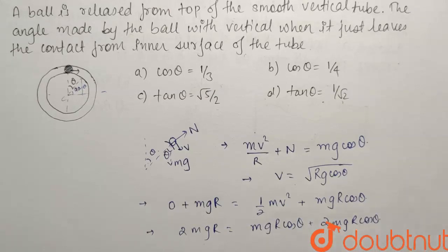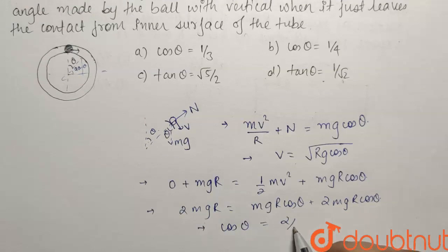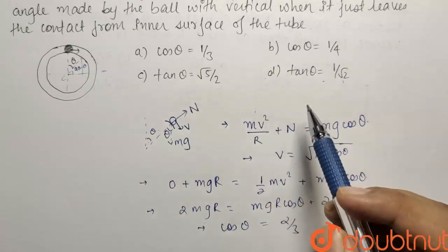From here if I simplify, what I get is that cos theta comes out to be equals to 2 upon 3. So cos theta has come out as 2 upon 3. So our both options a and b are wrong.